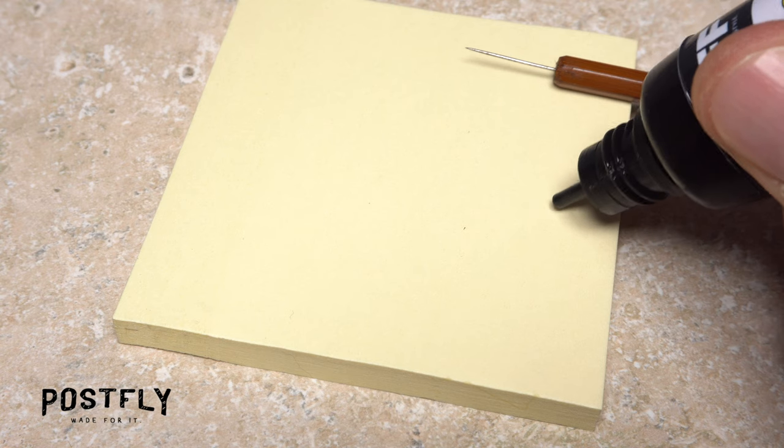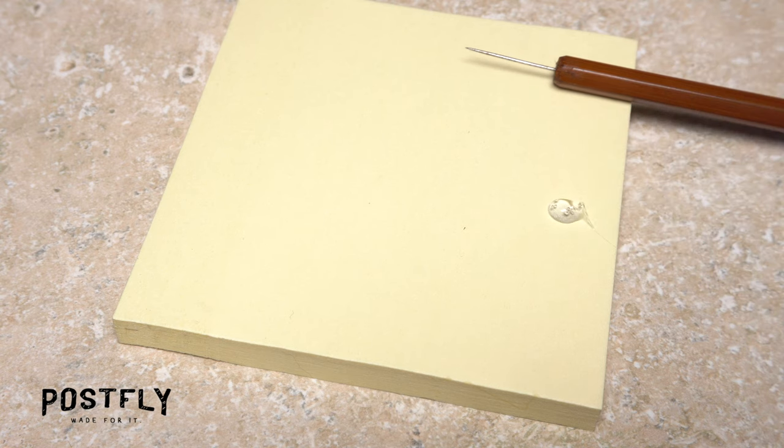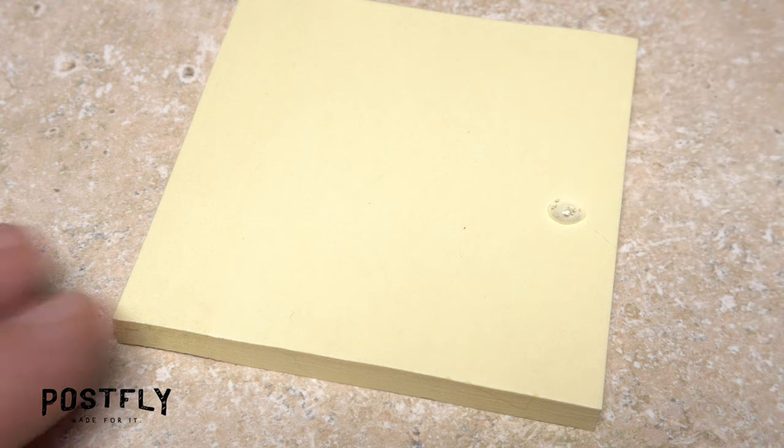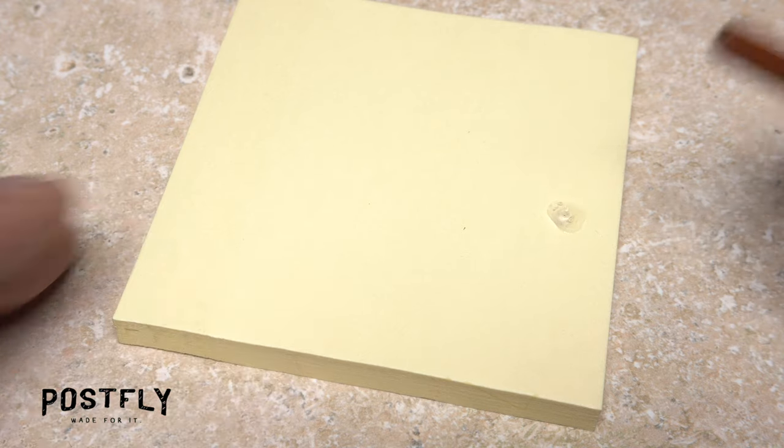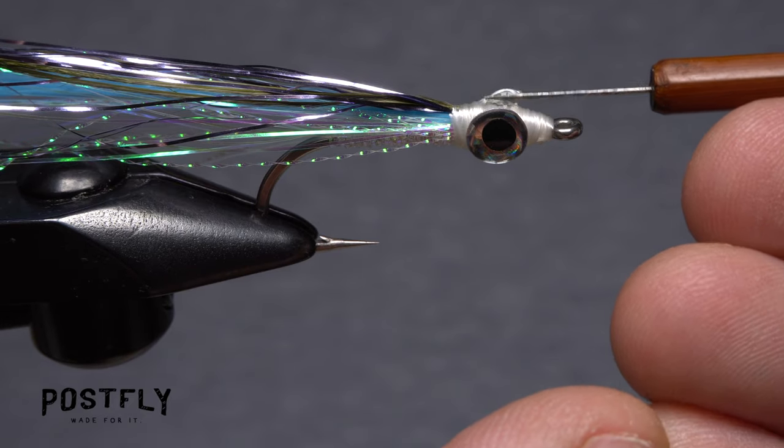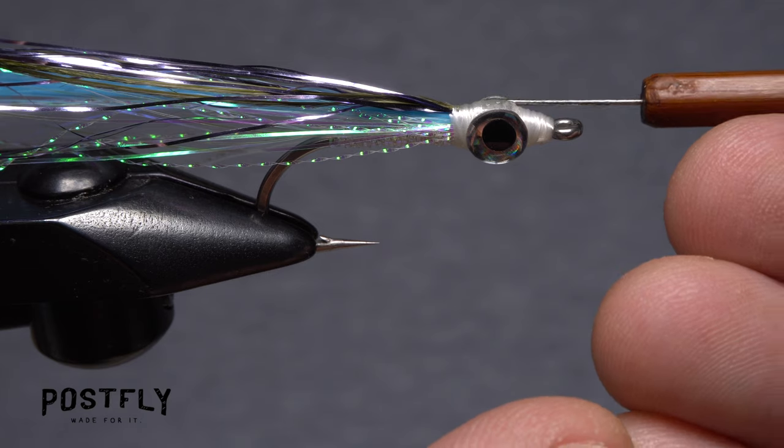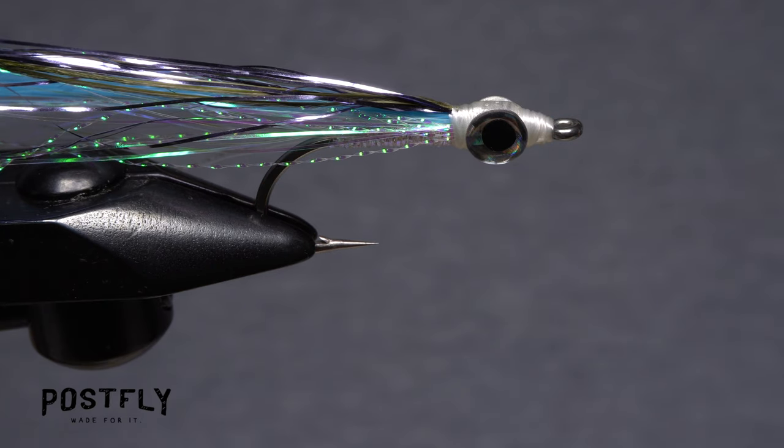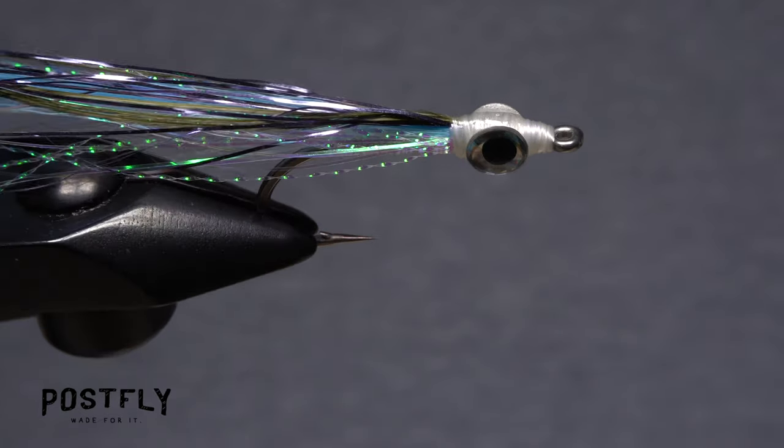Squeeze a small amount of UV cure resin onto a scrap piece of paper, here a sticky pad. Then use your bodkin to pick up just a bit. Make a small bridge with the resin between the two eyes on the top of the fly, then give the resin a healthy shot of UV light to cure it. The idea is to get the eyes more firmly affixed to the fly.